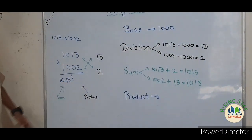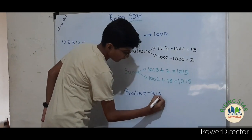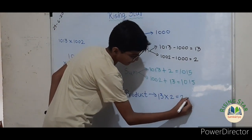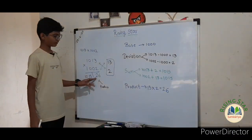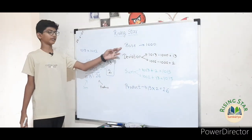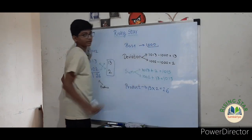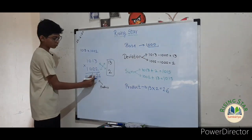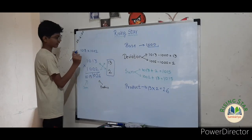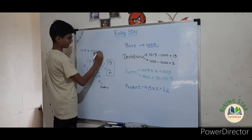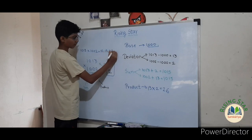Now let's find the product — you have to multiply the deviations. Thirteen into two equals twenty-six, so just write twenty-six here. But remember, the number of digits on the product side must equal the number of zeros in the base. Here there are two digits but three zeros in the base, so there should be three digits — just add a zero before the number, making it zero-two-six. Therefore, one thousand and thirteen into one thousand and two equals ten lakh fifteen thousand and twenty-six.